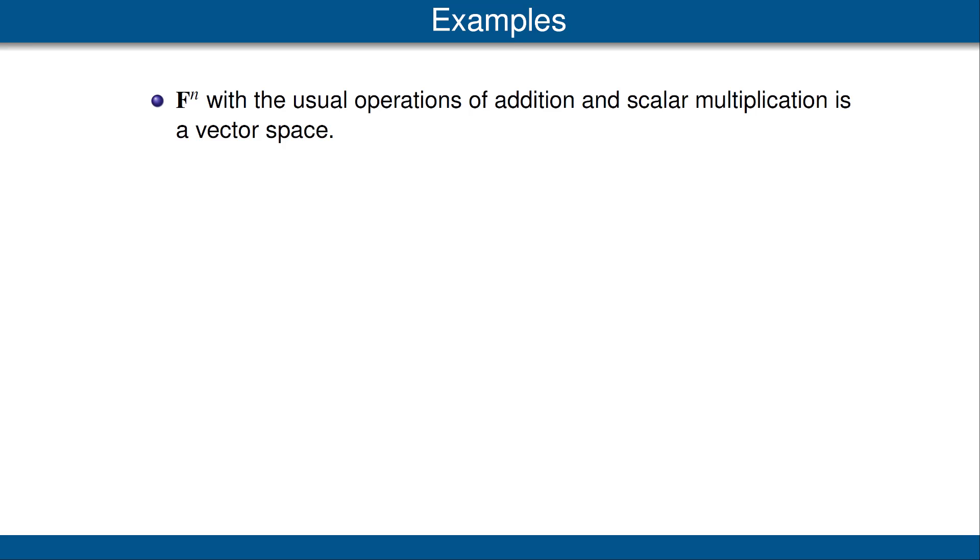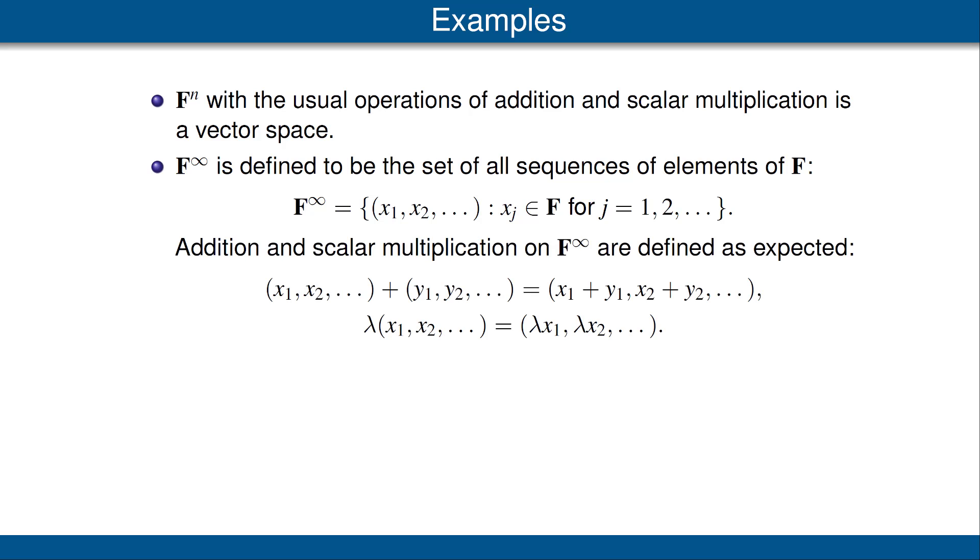Let's look at some examples of vector spaces. Our first example is F^n, with the usual operations of addition and scalar multiplication. It's no surprise that F^n is an example of a vector space, because we based our definition of vector space on the properties of F^n. So let's look at another example. F^∞ is defined to be the set of all sequences of elements of F. Addition and scalar multiplication on F^∞ are defined just as you would expect. To add two sequences, we add them coordinate-wise, and to multiply a sequence by a scalar, we multiply coordinate-wise, as shown here. With these definitions, F^∞ becomes a vector space, as you should verify.